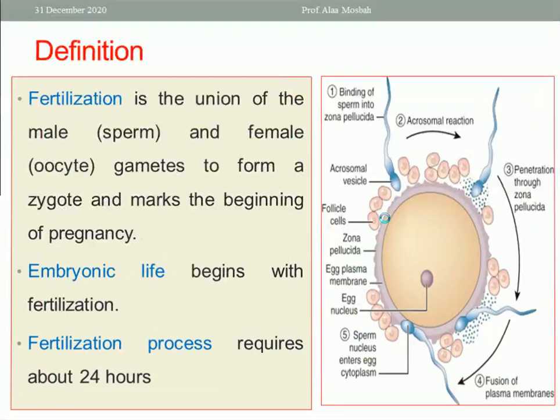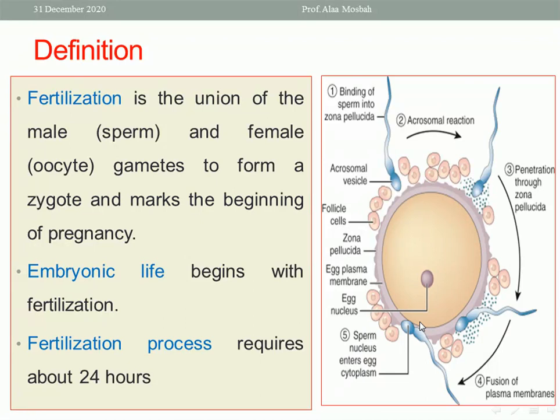Fertilization is the union of the male sperm and the female oocyte gametes to form a zygote, and it marks the beginning of pregnancy. Embryonic life begins with fertilization, and the fertilization process requires about 24 hours.